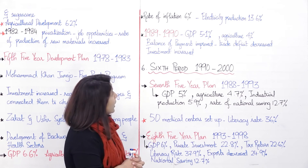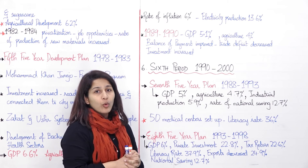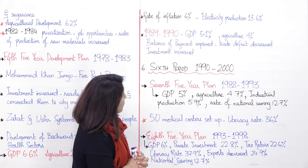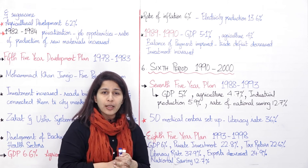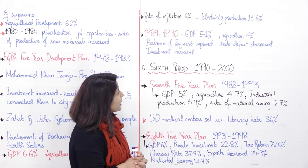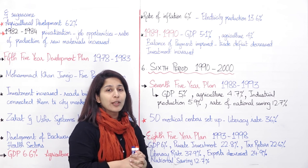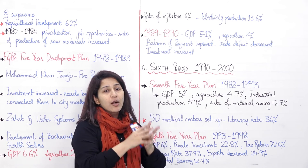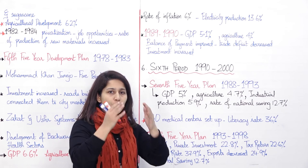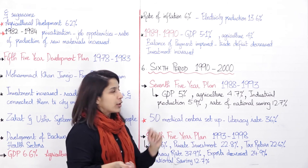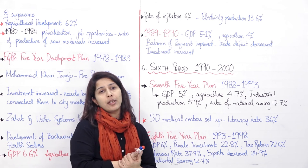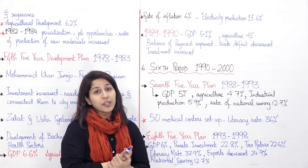Then came 1989 to 1990, the era when Benazir Bhutto became Prime Minister. She also took very good steps, due to which GDP rose by 5.1 percent. Agriculture rose by 4 percent — though the expected target was 5.2 percent, there was still a rise. Balance of payment improved, which caused trade deficit to decrease. Investment also increased because privatization was being promoted during these years.